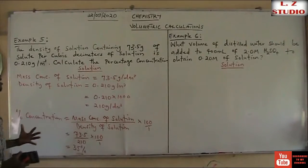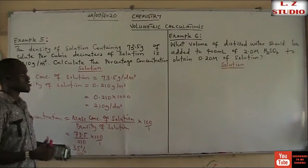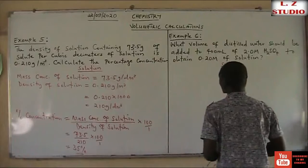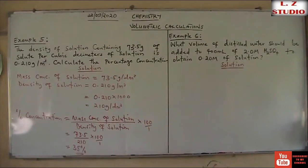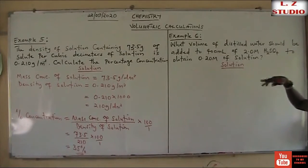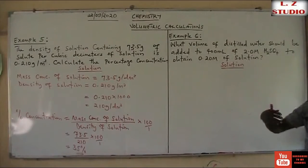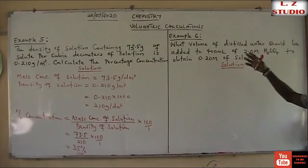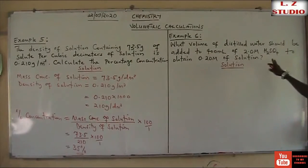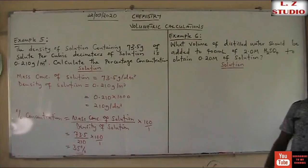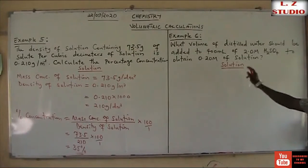You can go through it again and see how simple it is. That brings us to Example 6. Example 6 says: what volume of distilled water should be added to 400 mL (which is 400 cm³) of 2.0 molar tetroxosulfate(VI) acid to obtain a new concentration of 0.20 molar of the acid solution?